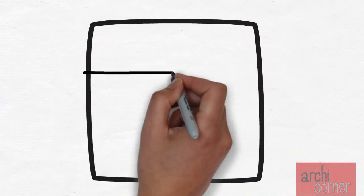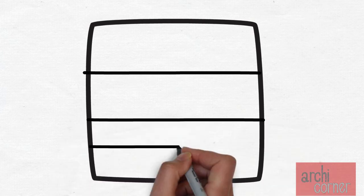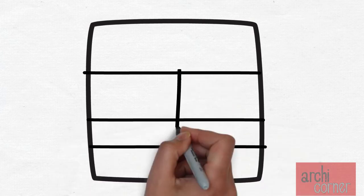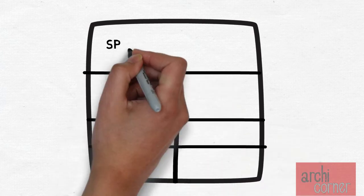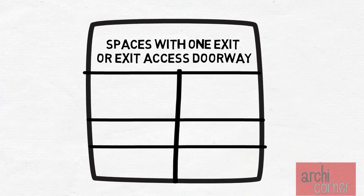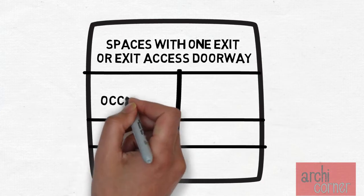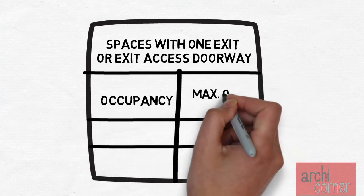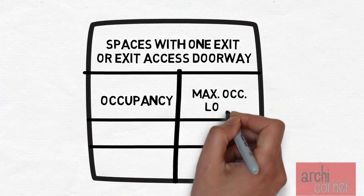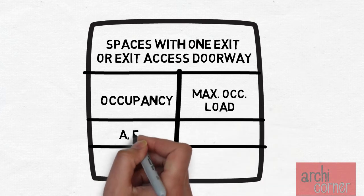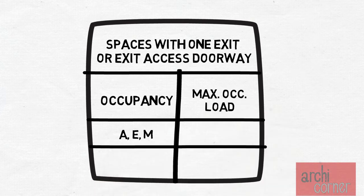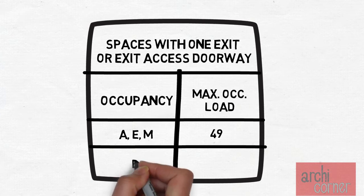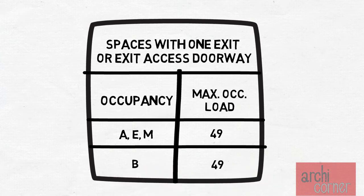So what are these requirements? It is actually very easy to figure out. All you must do is look at the IBC table that talks about this — and like I said, see my video description below for more information. This table will tell you the threshold of occupants you may have in a room or area before you need a second exit.